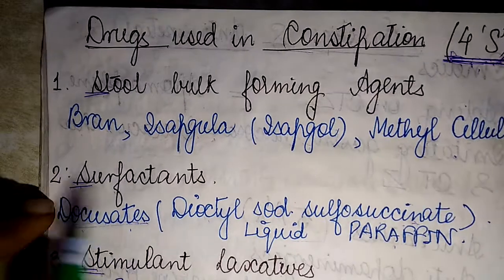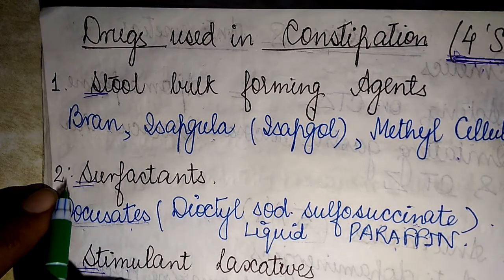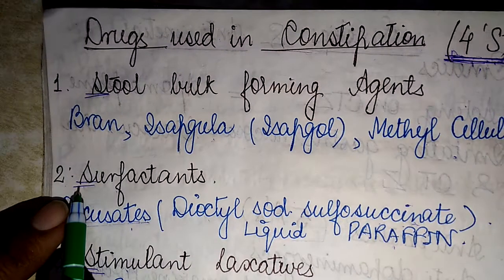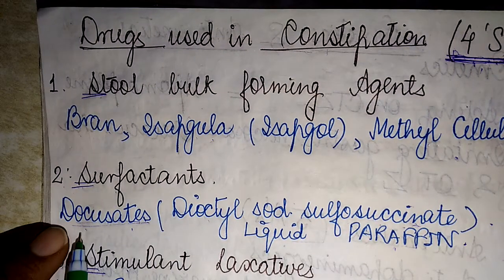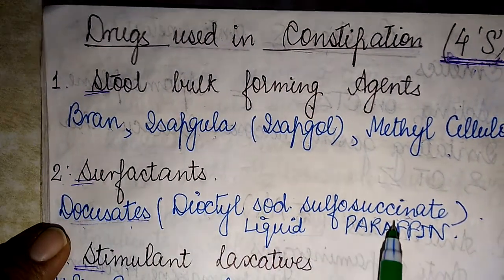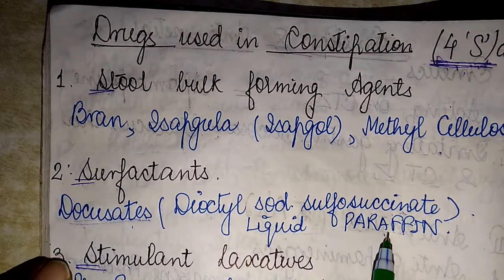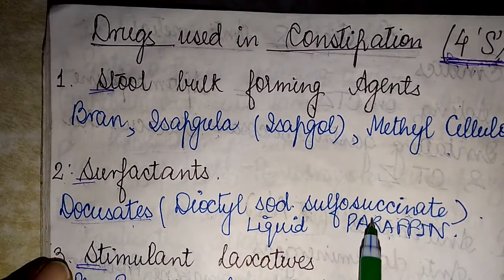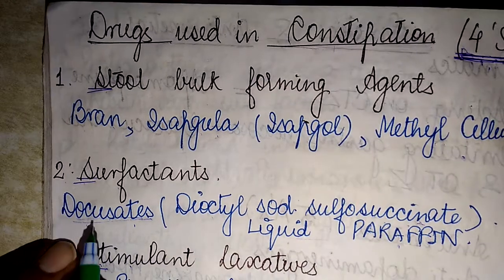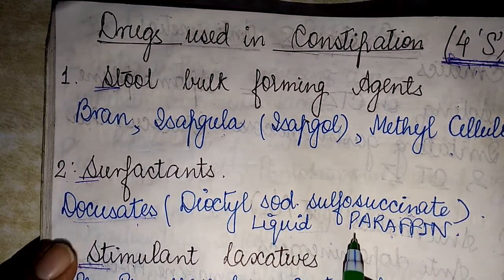The second S, out of the 4S, stands for the docusates — that is, dioctyl sodium sulfosuccinate — and liquid paraffin. You don't need to remember the full term; docusates and liquid paraffin is more than sufficient.